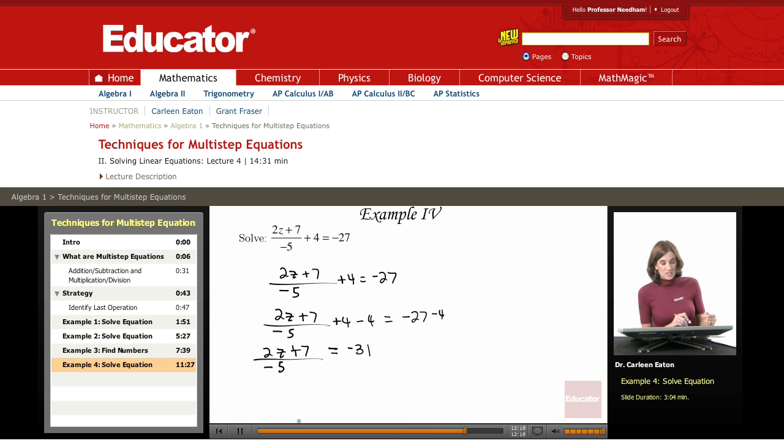The next step is to multiply both sides of the equation by negative 5. And remember, you have to multiply by negative 5, not positive 5.